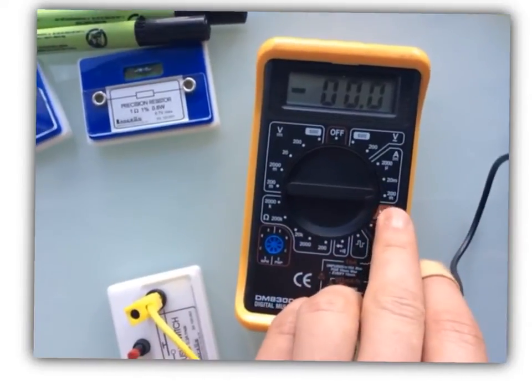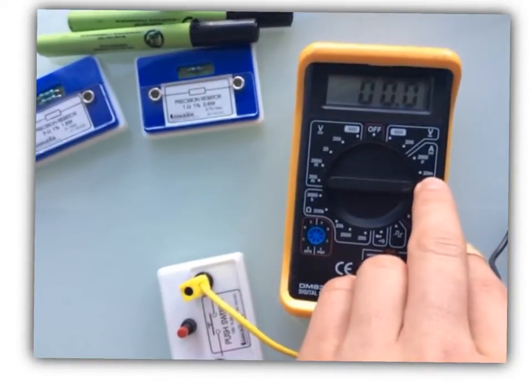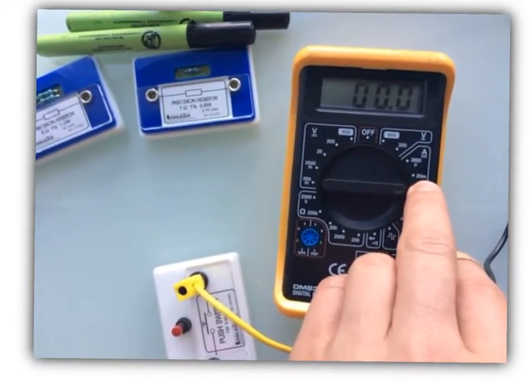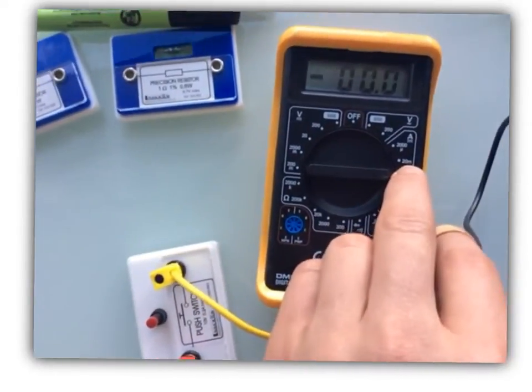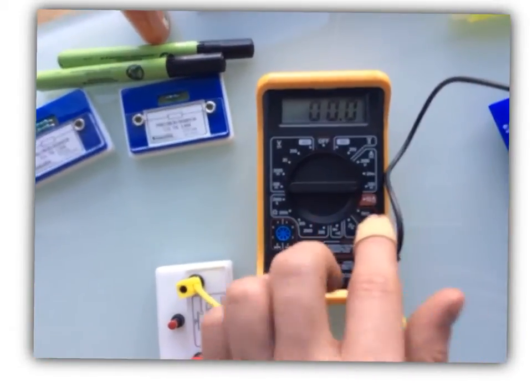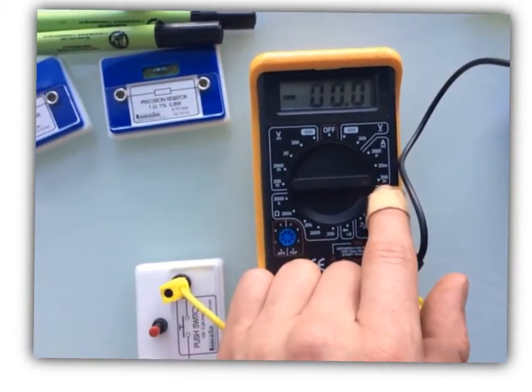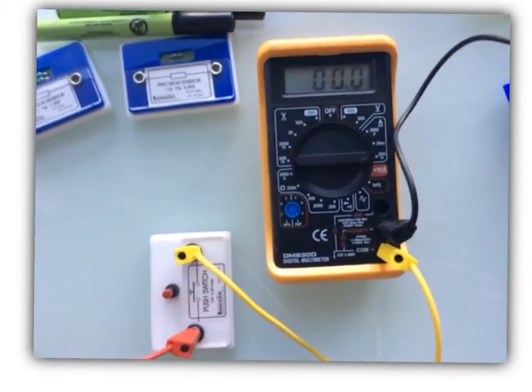Now you might be wondering, why wouldn't you just always use the 200? The advantage of using this 20 is it gives you more precise measurement - it gives you an extra decimal place. If you can be more precise it's always better to be. But in circuits in general, especially in unit one, you're going to be either using this 10 amp setting or the 200 milliamp setting.